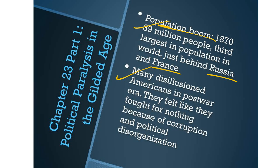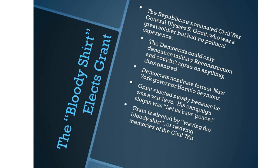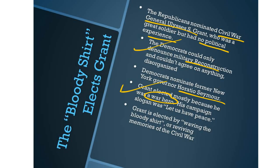There were many disillusioned Americans in the post-war era. They felt like they fought for nothing because of corruption and political disorganization. The Republicans nominated Civil War General Ulysses S. Grant, who was a great soldier but had no political experience. The Democrats could only denounce military reconstruction, couldn't agree on anything, and nominated former New York Governor Horatio Seymour. Grant was elected mostly because he was a war hero. His campaign slogan was 'Let us have peace,' and he was elected by waving the bloody shirt — reviving memories of the Civil War.